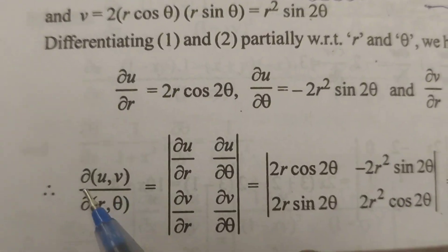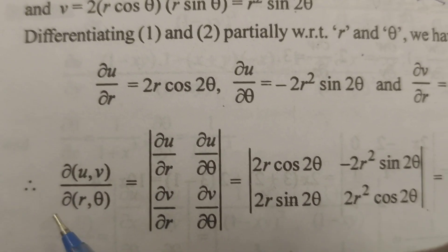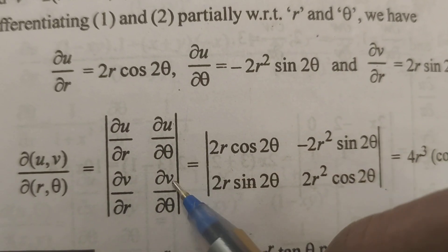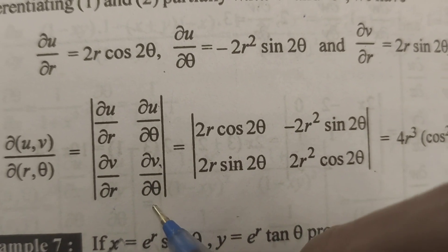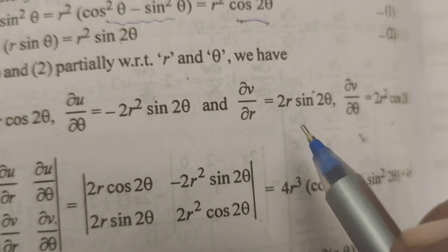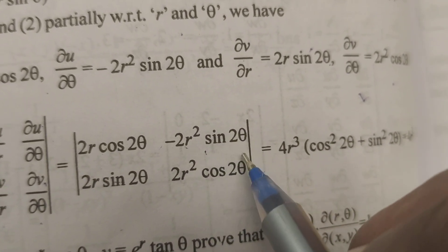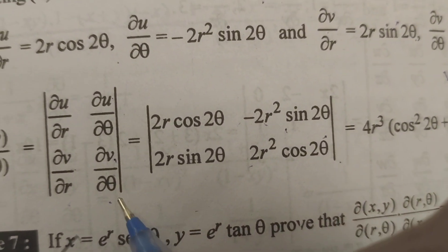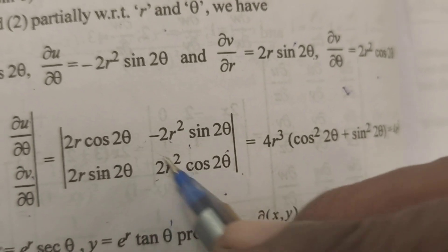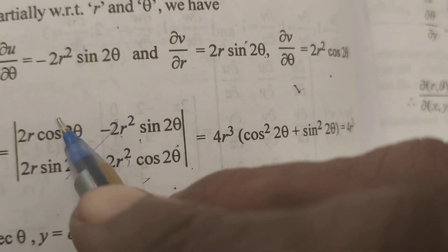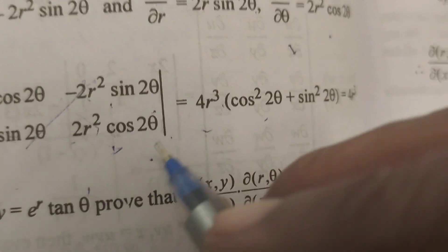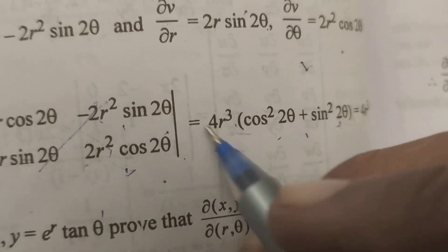Now using the Jacobian transformation formula, ∂(u,v)/∂(r,θ) is the determinant of the matrix with entries ∂u/∂r, ∂u/∂θ, ∂v/∂r, ∂v/∂θ. Substituting these values and applying the determinant formula ad − bc gives 4r³(cos²2θ + sin²2θ).